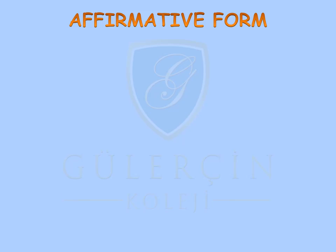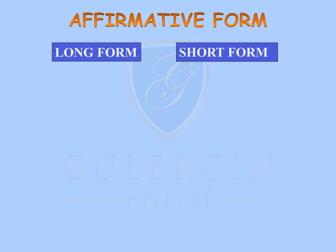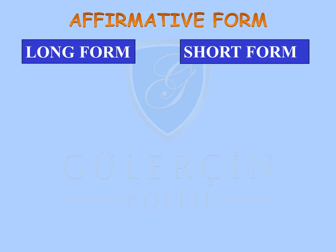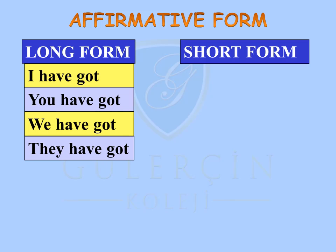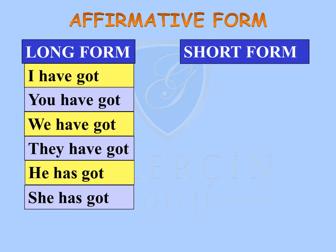The affirmative form is divided into two parts: long form and short form. Let's have a look at the long form. I have got, you have got, we have got, they have got, he has got, she has got, and it has got.